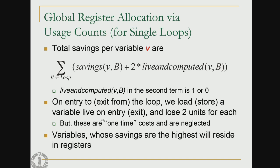There is a minor factor we ignore — at the entry and exit of the loop, we have to load or store a live variable, which requires 2 units for load or 2 units for store. But these are one-time costs, required only at loop entry or exit. Once we compute the total savings, the variables with the highest savings will reside in registers.